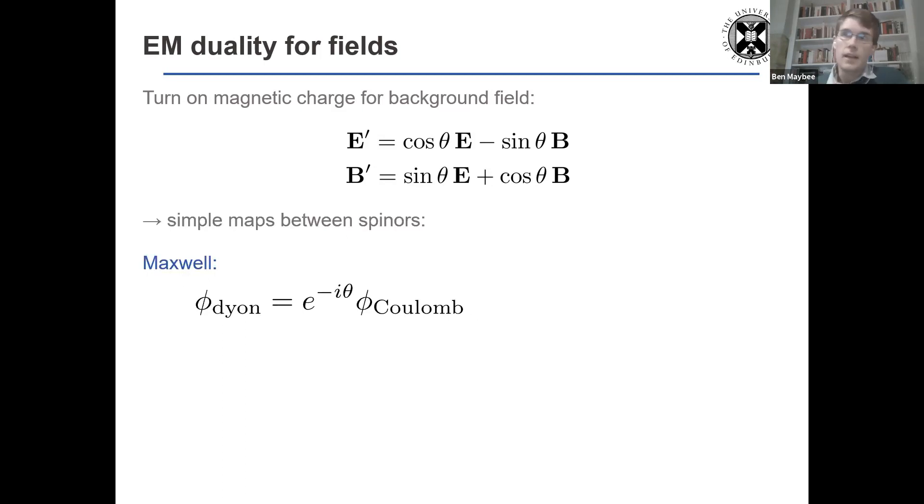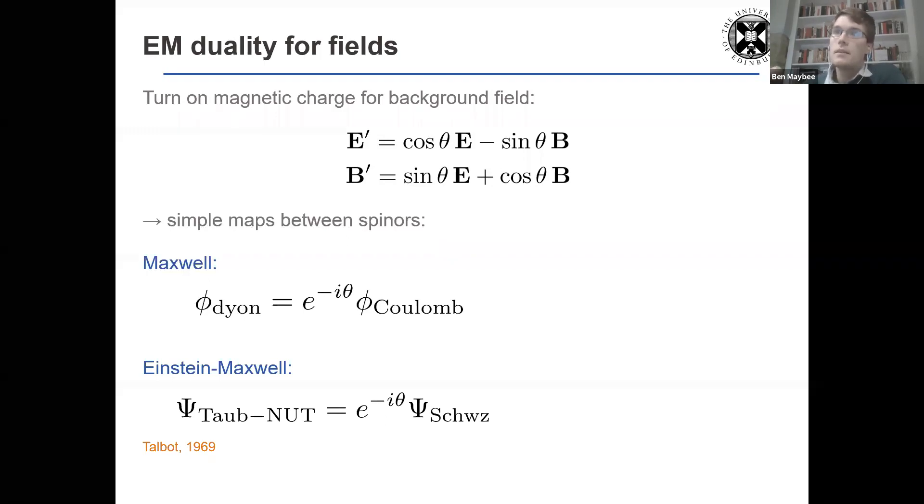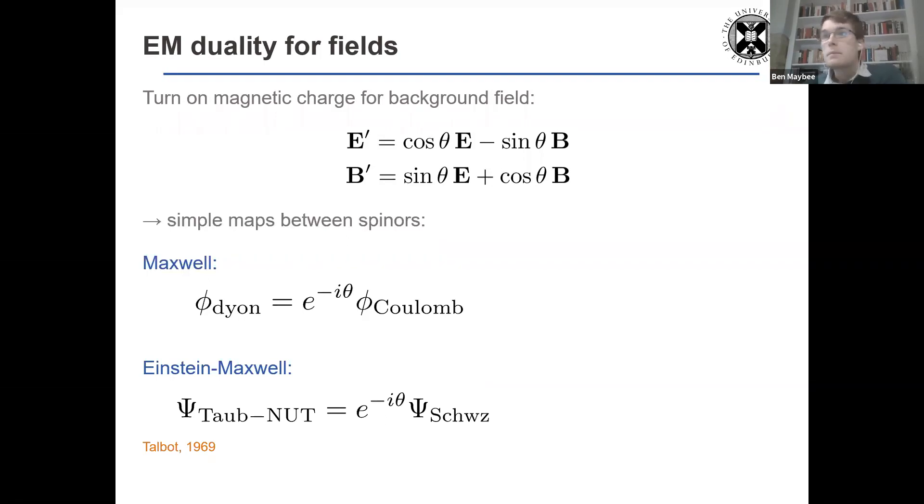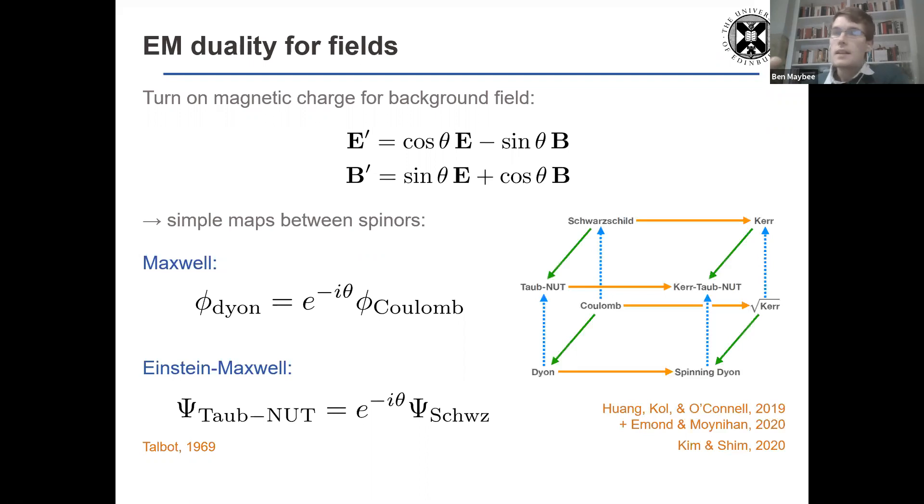So a dyon is defined by, you do this rotation, you turn on magnetic charge from Coulomb, and its Maxwell spinor is very simply obtained by phase rotation. Similarly, for Einstein-Maxwell, it's long been known that you can generate maps between black hole solutions using Weyl spinor, and they're remarkably simple.